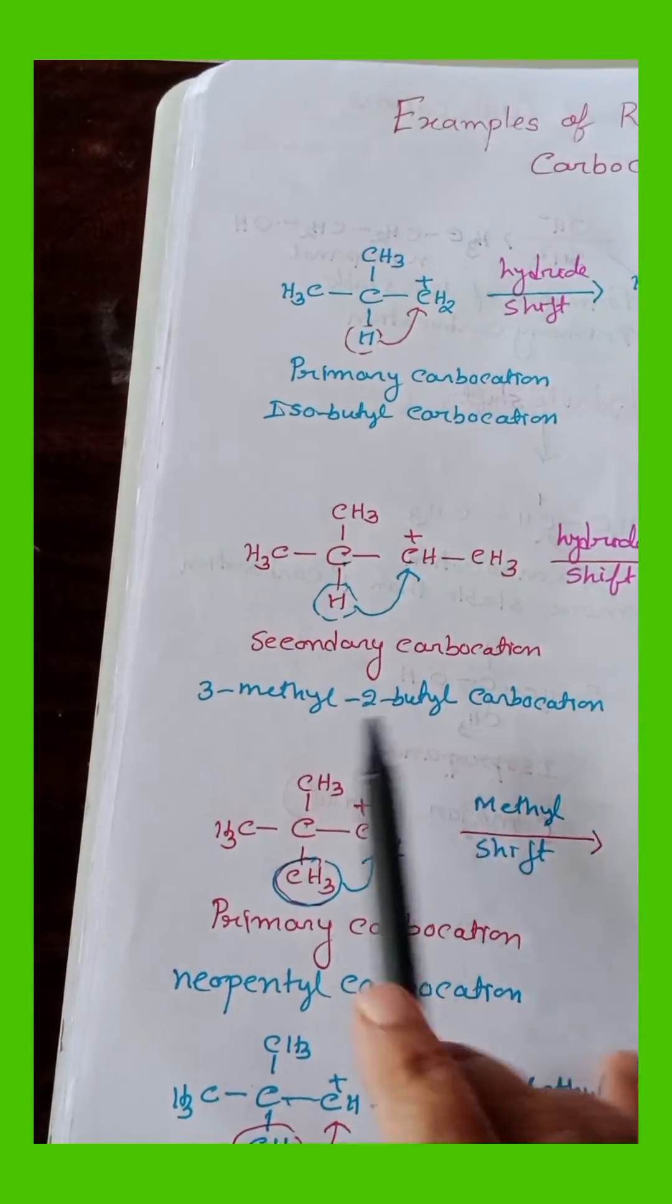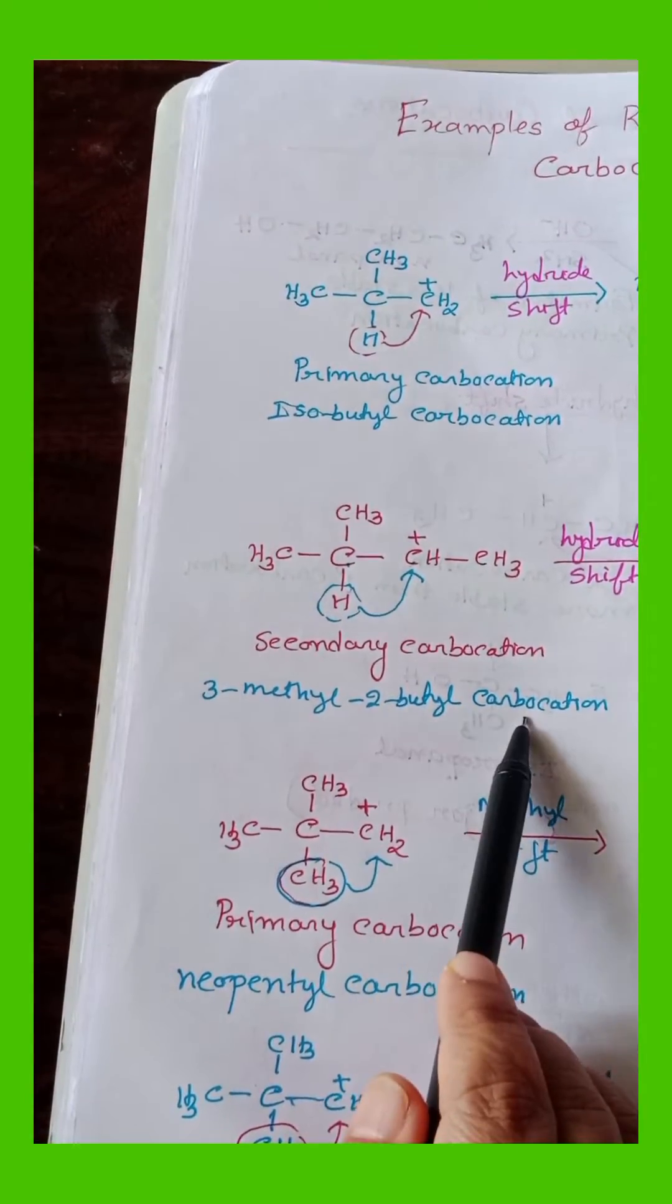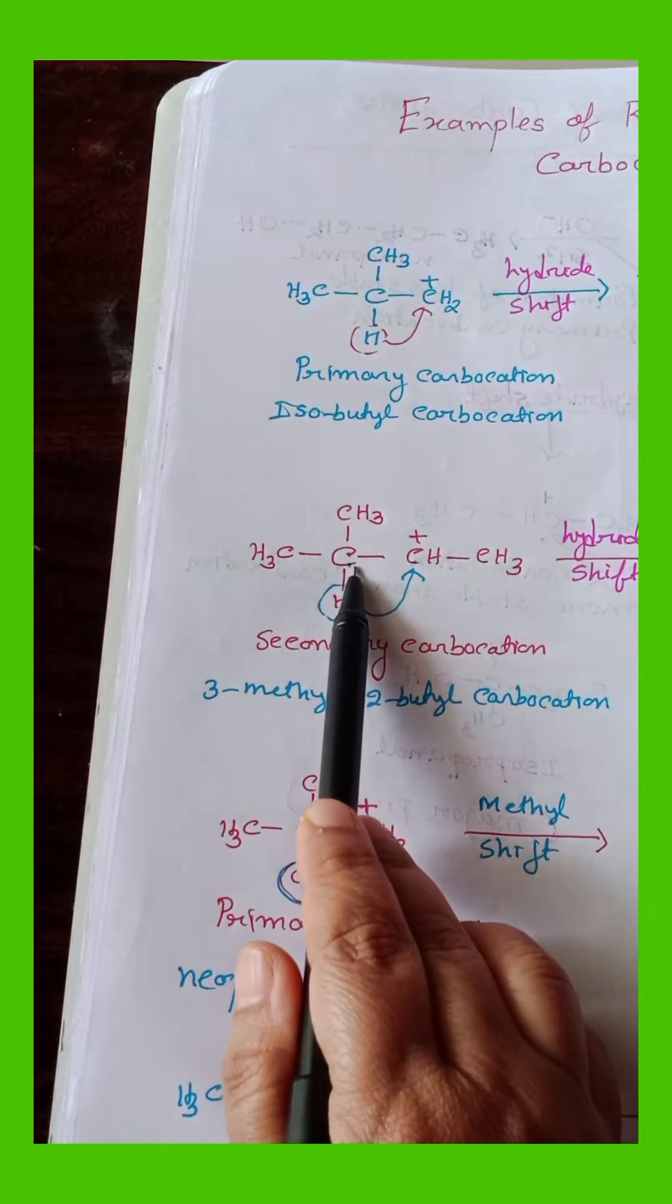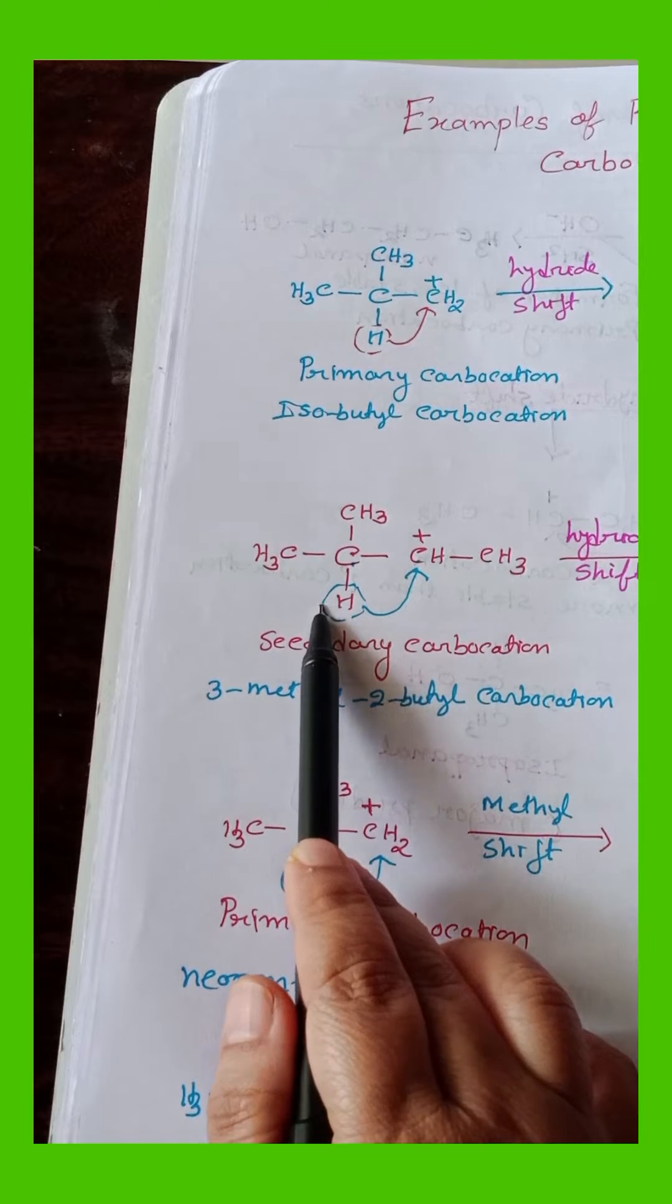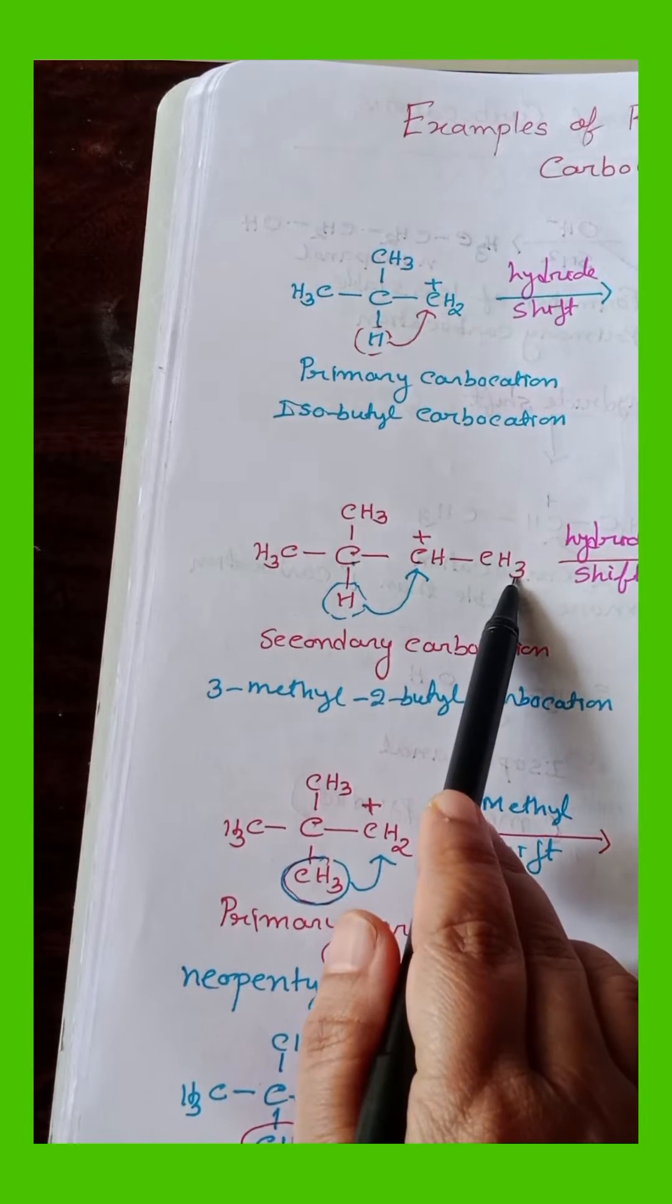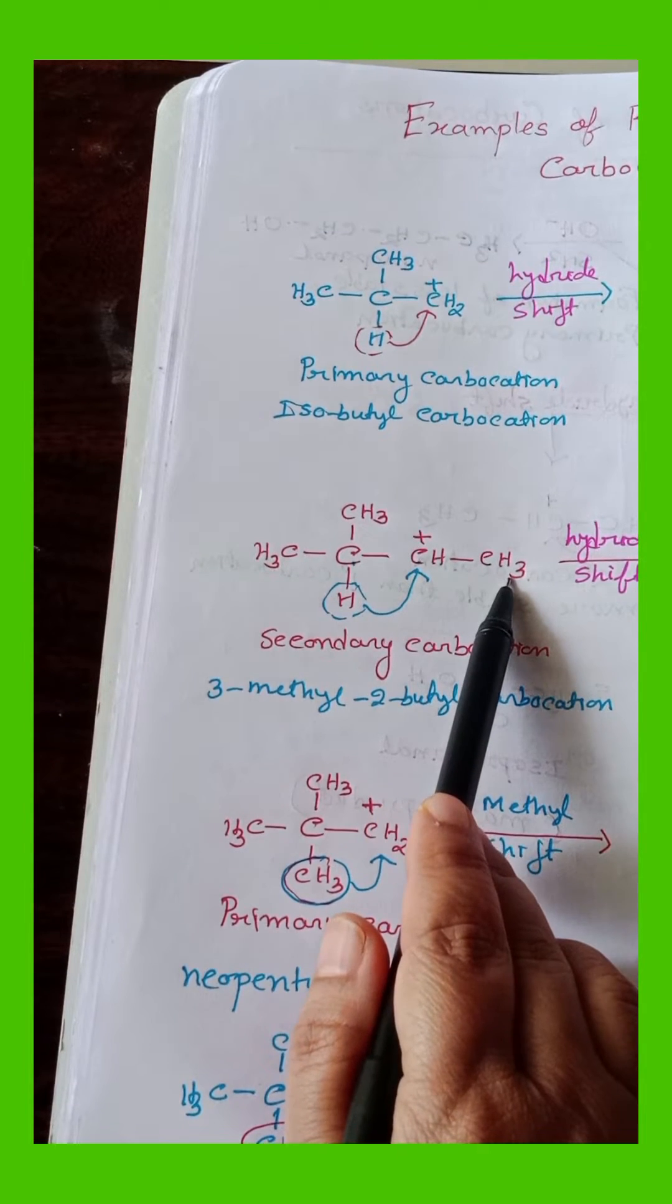Second example is 3-methyl-2-butyl carbocation. This is beta-carbon. This is also beta-carbon. It contains two types of beta-hydrogen. But if this beta-hydride shift takes place, we will get a primary carbocation.